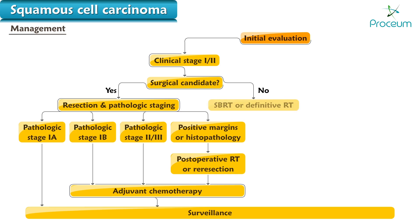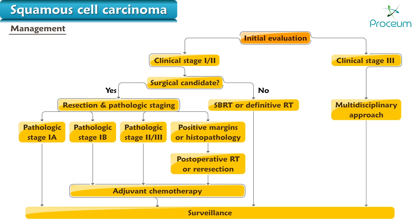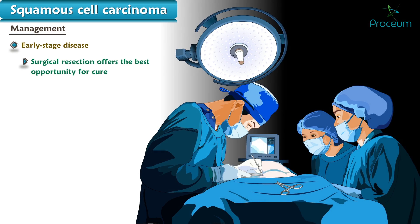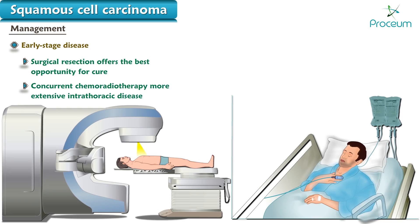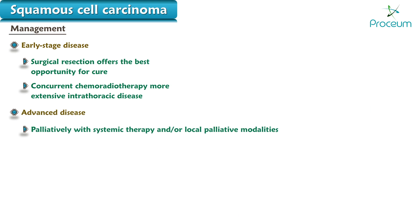If the patient is not a surgical candidate, stereotactic brachyradiotherapy or definitive radiotherapy followed by surveillance should be the approach. If patients are diagnosed in clinical stage 3 or further, a multidisciplinary approach is required. For patients with early stage disease, surgical resection offers the best opportunity for cure, while concurrent chemoradiotherapy is preferred for those with more extensive intrathoracic disease. Patients with advanced disease are managed palliatively with systemic therapy and/or local palliative modalities.